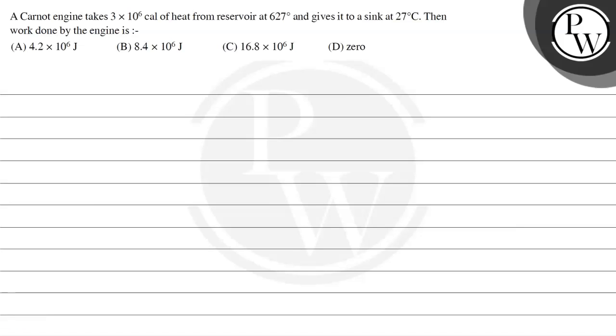Hello, let's see the question. The question says a Carnot engine takes 3 × 10^6 calories of heat from a reservoir at 627 degrees Celsius and gives it to a sink at 27 degrees Celsius. Then work done by the engine is - we have four options.